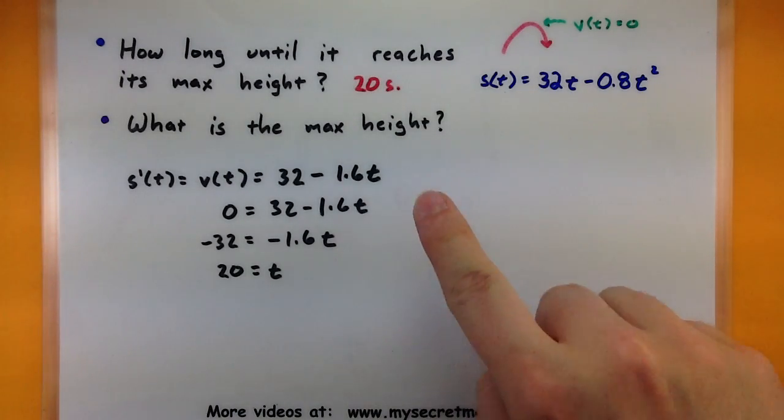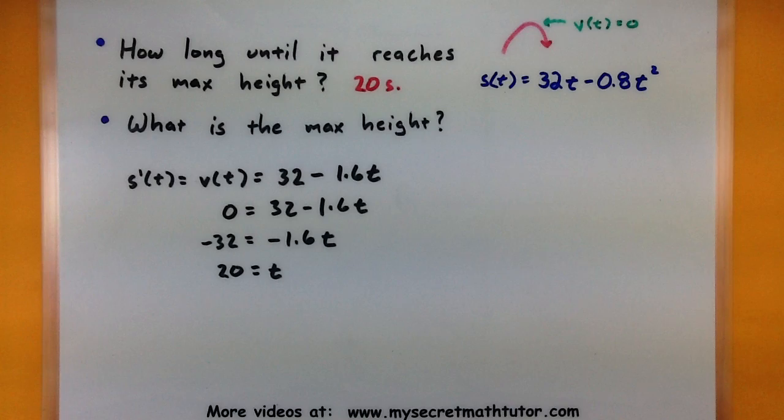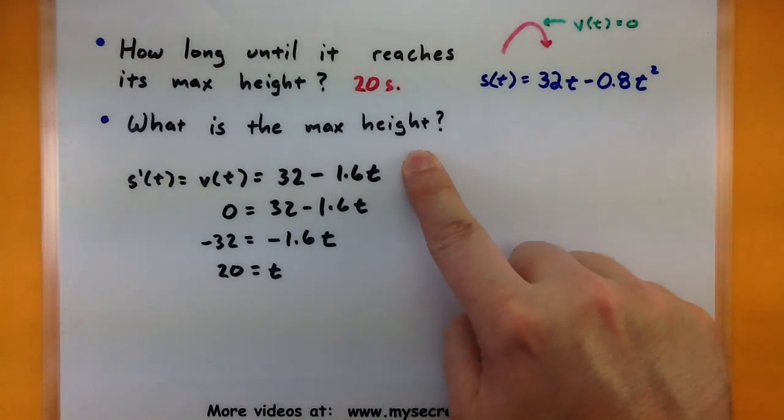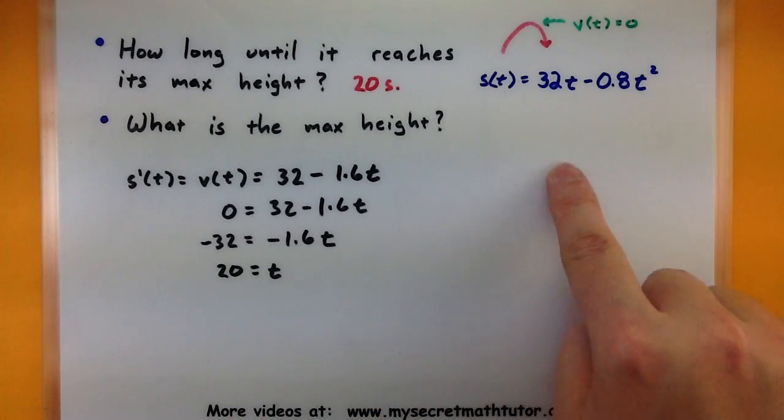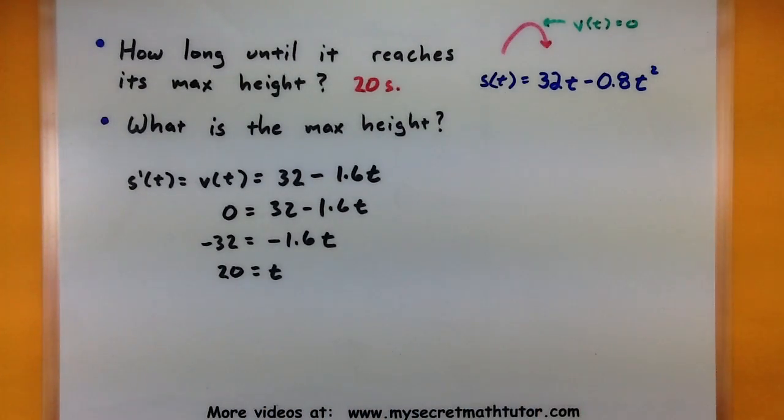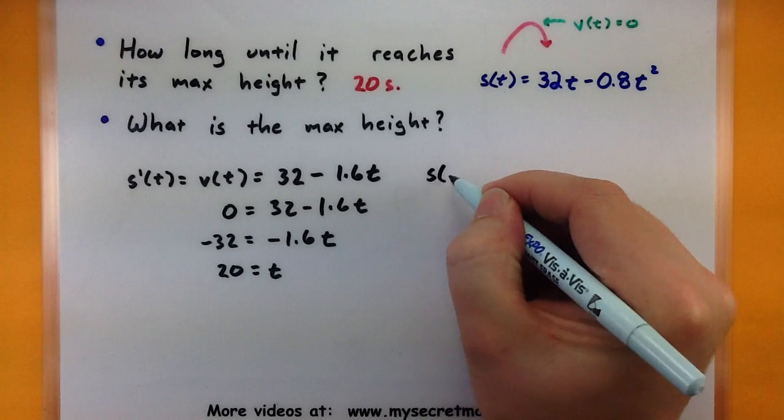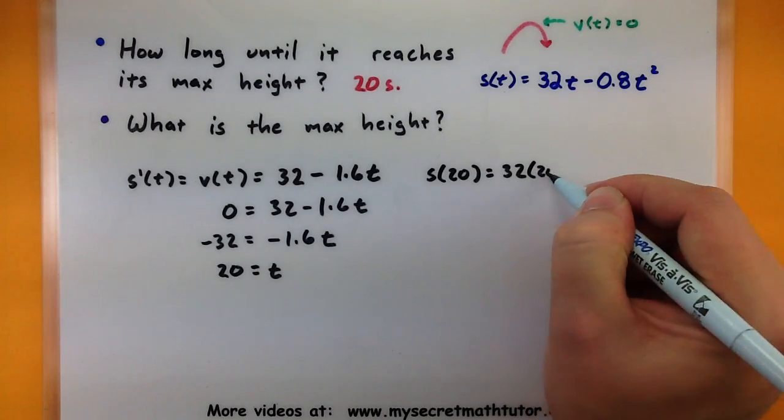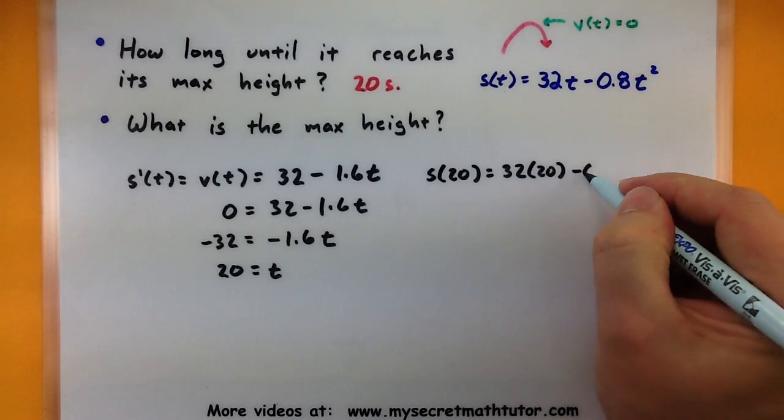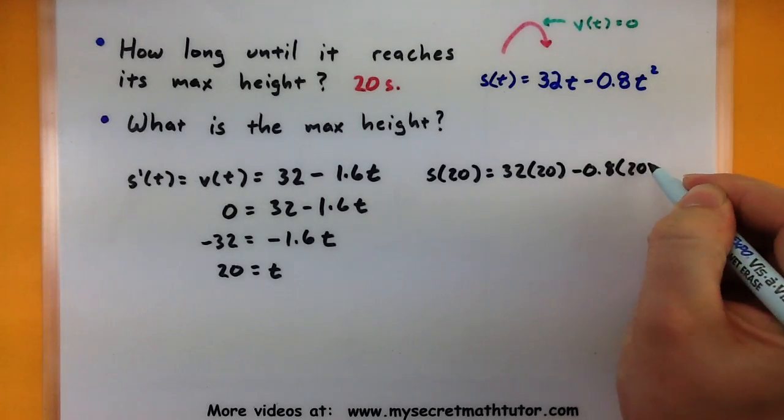Let's see if we can do the second part. What is that maximum height? Well, if I actually want to know the height, then I will return back to the position function and simply put in the 20. So its height after 20 seconds, let's go ahead and substitute that in there. So 32 times 20 minus 0.8, 20 squared.